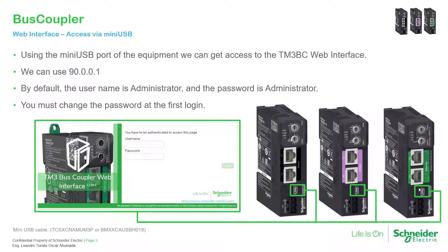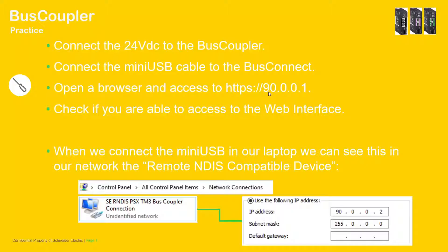All of the bus couplers have the mini USB on the front part so we can connect. In order to connect, we need to open the browser and type 90.0.0.1. When we first log in, it will ask you to enter your credentials, and we need to use 'Administrator' as the username and 'Administrator' as the password, with the initial 'A' in capital.